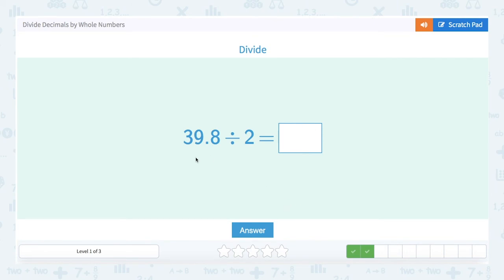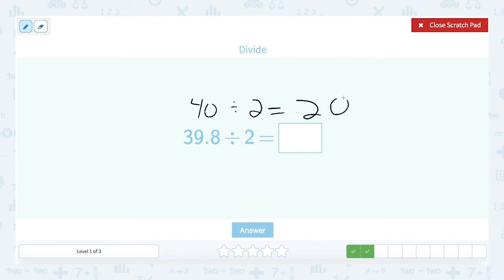Our dividend is 39.8 and we divide by 2. So again, let's go ahead and estimate an answer. So 39.8 is very close to 40. 40 divided by 2 equals 20. So I should expect to get an answer close to 20.